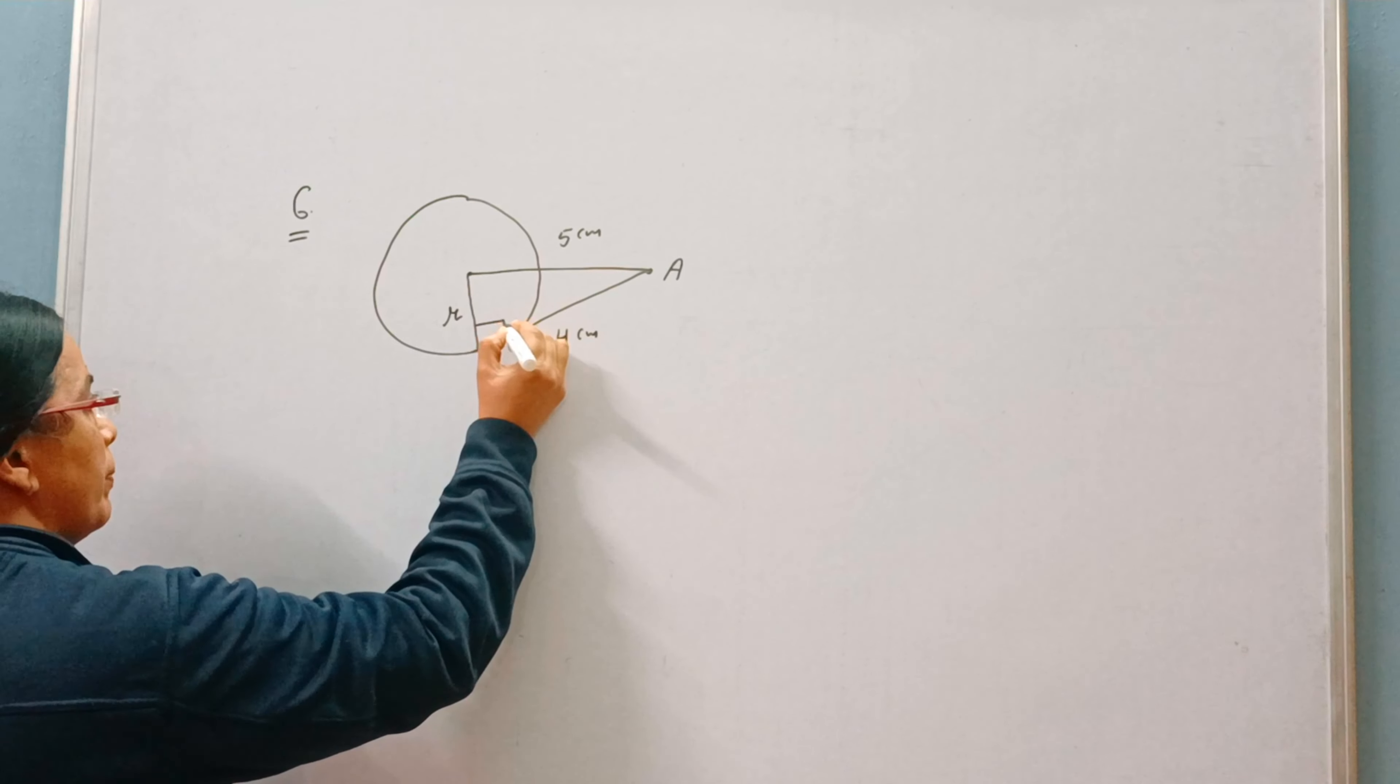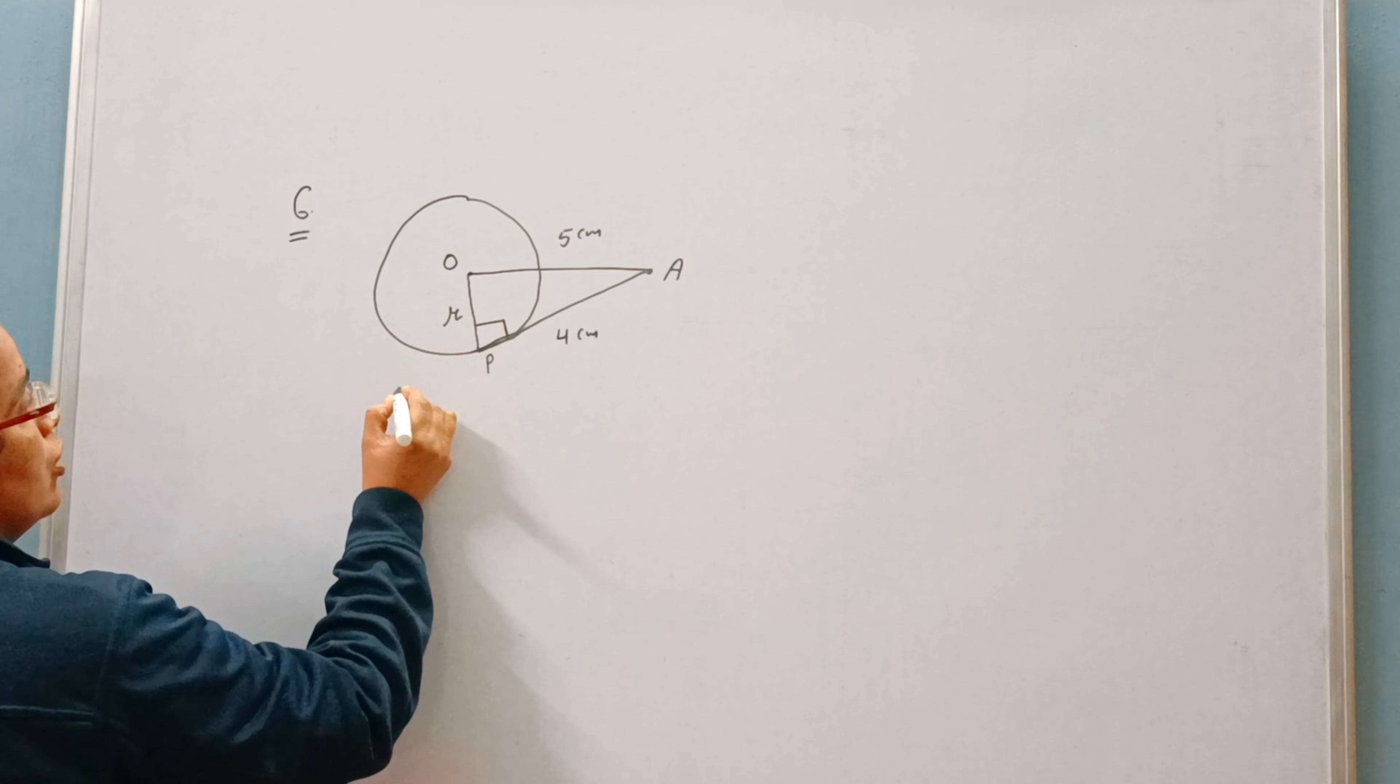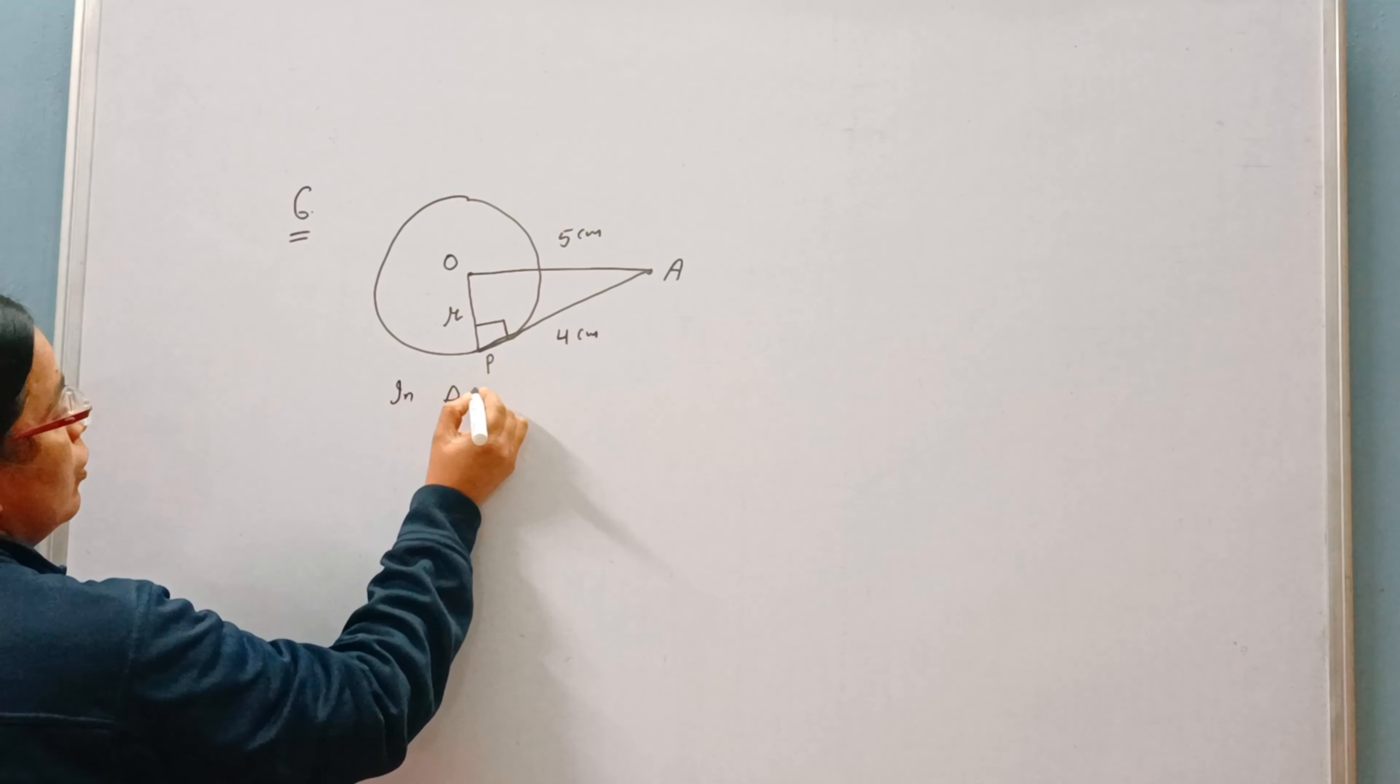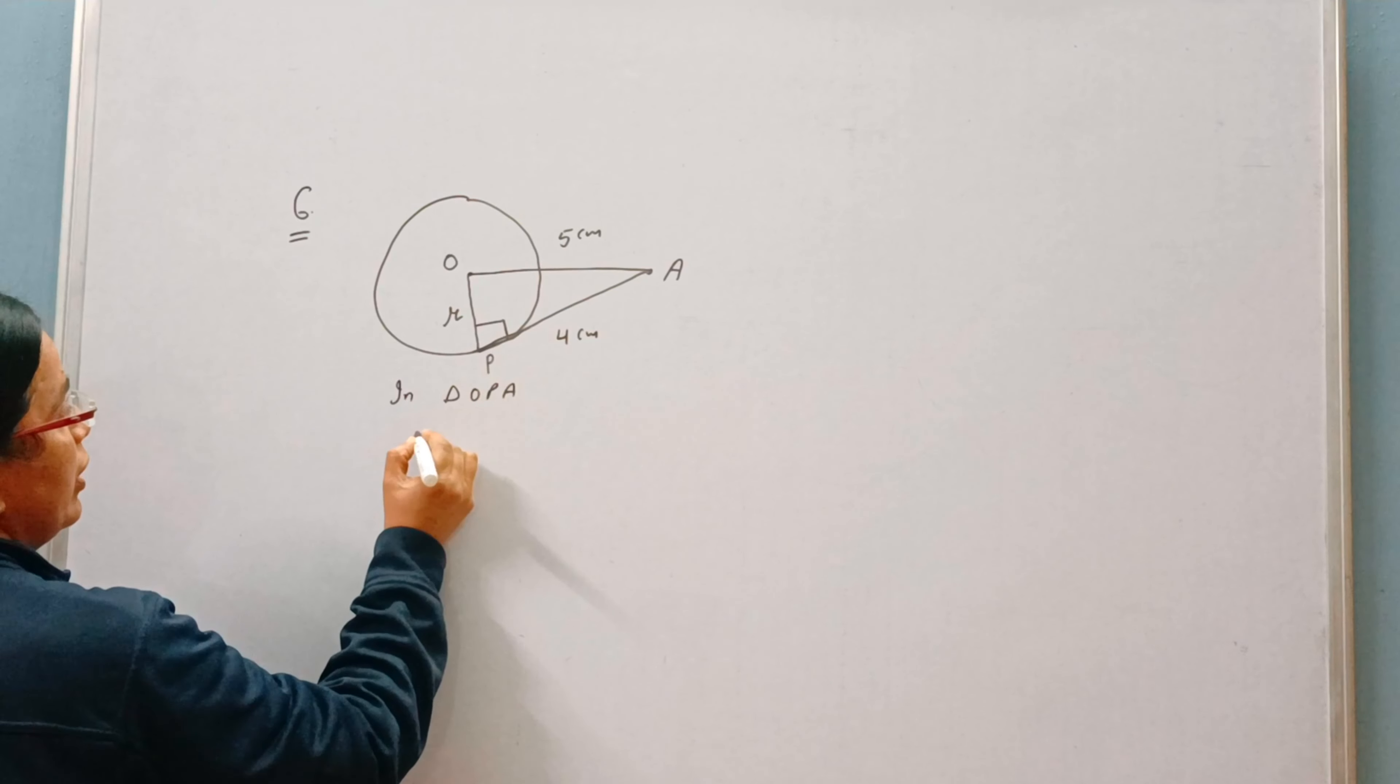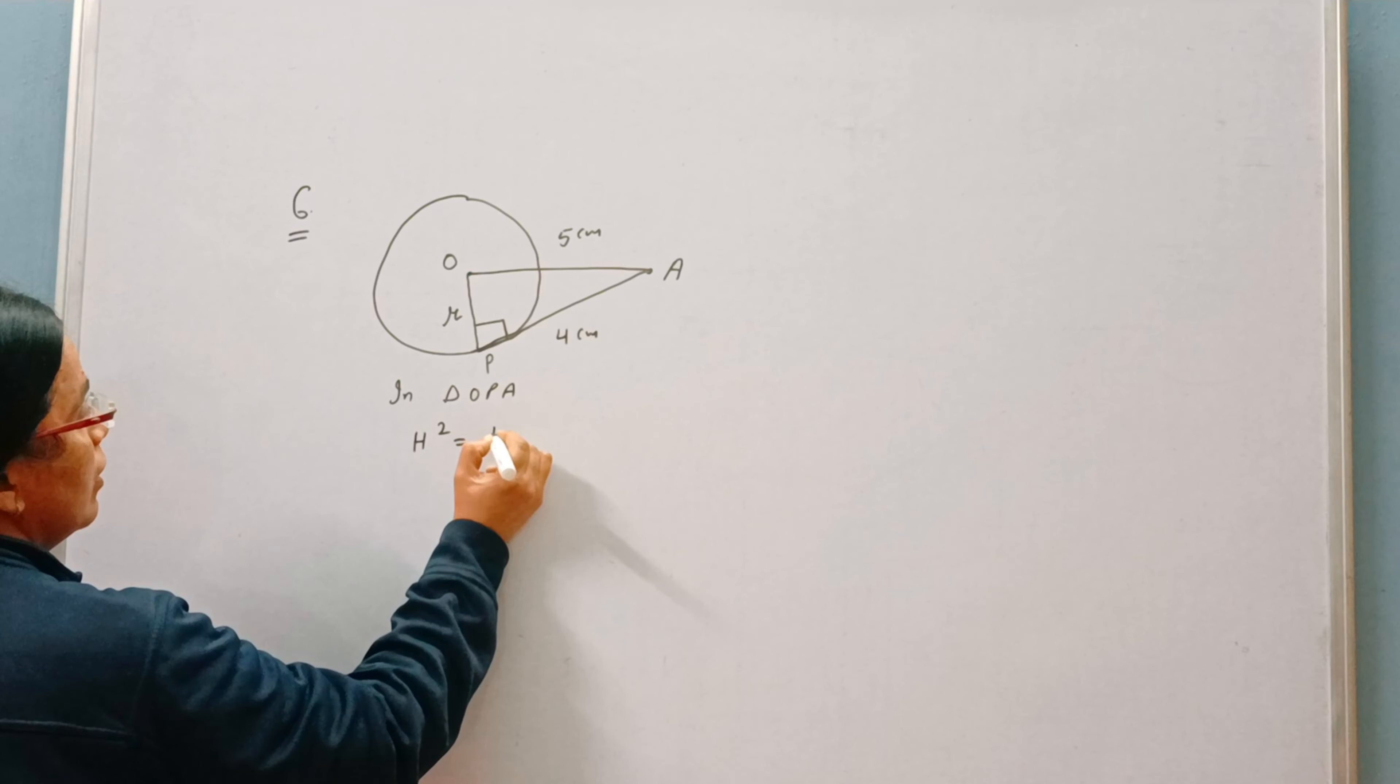Now we know radius is perpendicular to tangent. So we can consider triangle OPA and we can apply Pythagoras theorem.